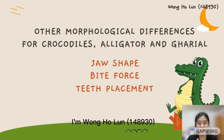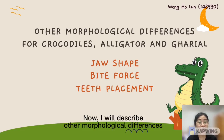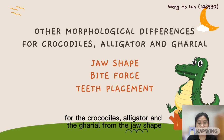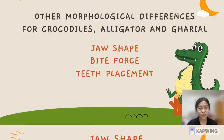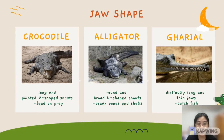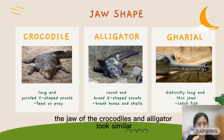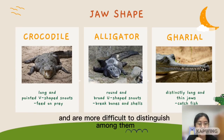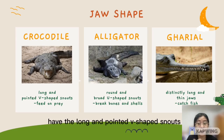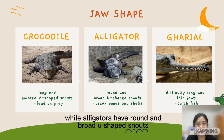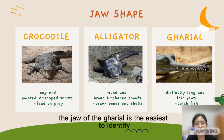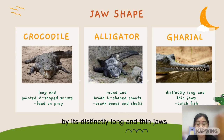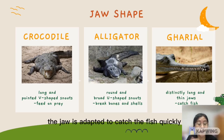I am Wong Ho Lung. Now I will describe other morphological differences for crocodiles, alligators and gharials from the jaw shape, bite force and teeth placement. The jaws of crocodiles and alligators look similar and are more difficult to distinguish. Crocodiles have long and pointed V-shaped snouts used to catch a variety of prey, while alligators have round and broad U-shaped snouts used to break bones and shells. The gharial's jaw is the easiest to identify — distinctly long and thin, adapted to catch fish quickly.